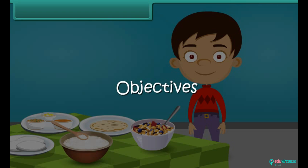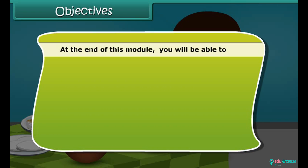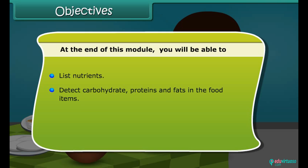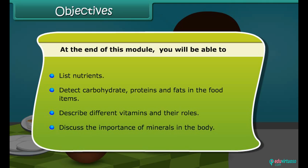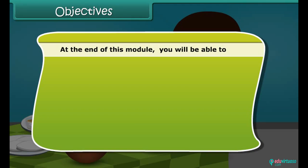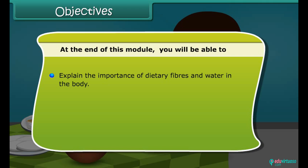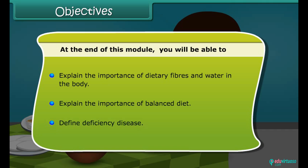Dear friends, at the end of this lesson, you will be able to list nutrients and detect carbohydrates, proteins and fats in the food items. You will also be able to describe different vitamins with their roles, discuss the importance of minerals in the body, explain the importance of dietary fibers and water in the body, explain the importance of balanced diet, and define deficiency diseases.